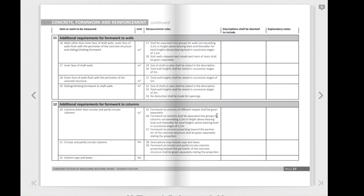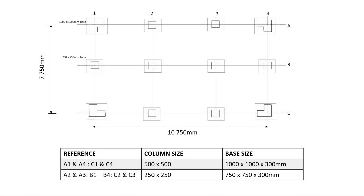With this background and essential measuring guidelines, let's jump into today's exercise. The first drawing provides a clear reference for our columns, and below the drawing there's a table listing the reference numbers for each column — A1 and A4, C1 and C4 — as well as the sizes of our columns. We have a total of 12 columns in the structure, divided into two main types: four L-shaped columns (A1, A4, C1, and C4) sized at 500 by 500 millimeters, and square-shaped columns sized at 250 by 250 millimeters.